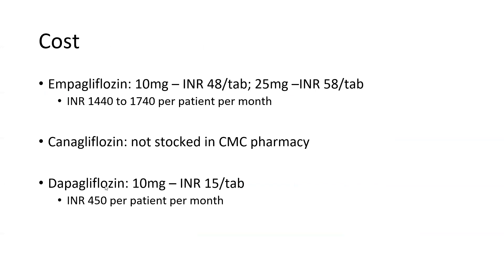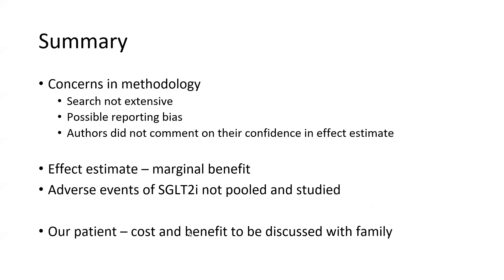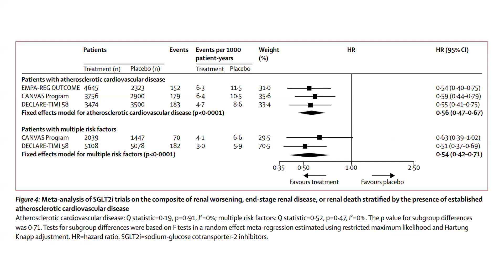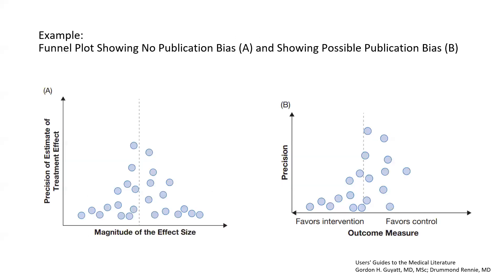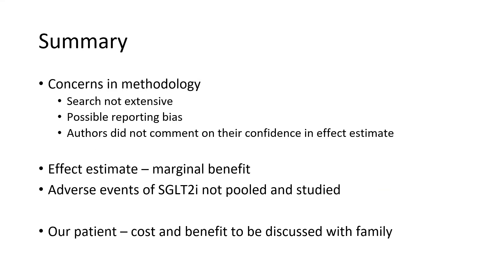Now let's look at cost. Empagliflozin and dapagliflozin are available in our pharmacy. Empagliflozin costs about 1,000 to 1,740 rupees per patient per month; dapagliflozin costs about 450 rupees per patient per month. For about one year, this costs approximately 5,400 rupees per patient. If we were to treat 1,000 patients for a year, the total cost would be approximately 54 lakh rupees — to decrease major adverse cardiovascular events by about three fewer per 1,000 patient-years.